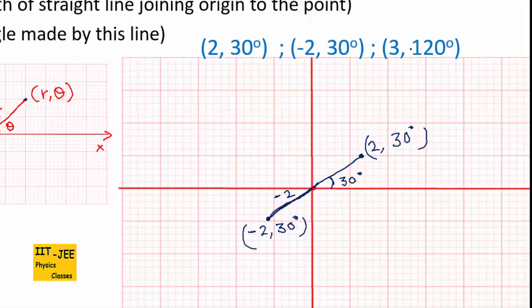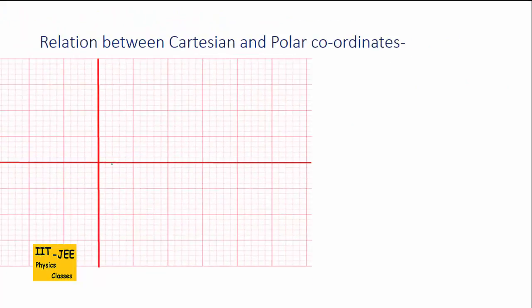Now suppose we have to draw 3, 120 degrees. We always take the angle from the positive x-axis, so first we go to 120 degrees. Then we mark a length of 3 along that direction. This point would be 3, 120 degrees.